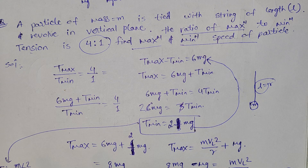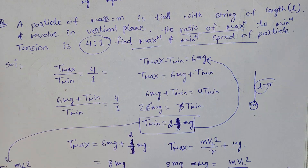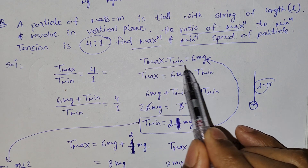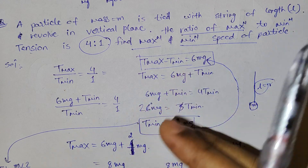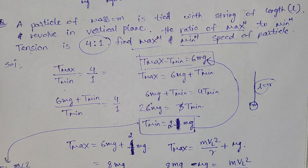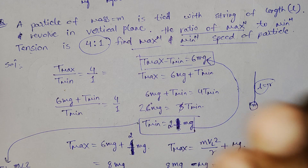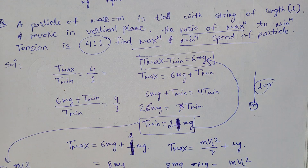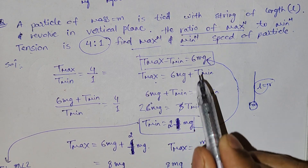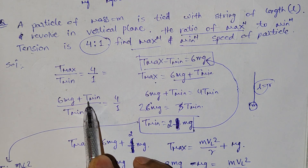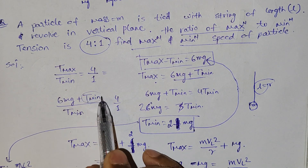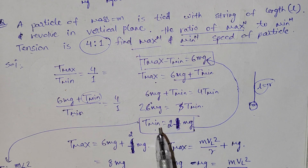You are given the ratio T_max to T_min. The difference between maximum tension and minimum tension, T_max minus T_min, always equals 6mg in just-completing-the-circle case. So T_max = 6mg + T_min. Substitute to solve for T_min clearly.